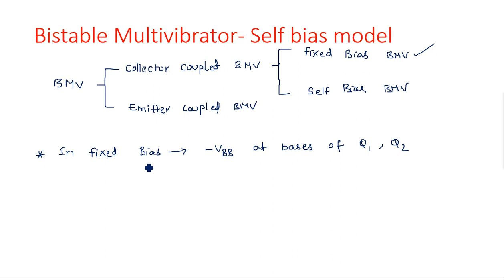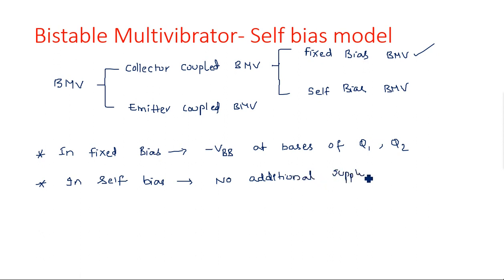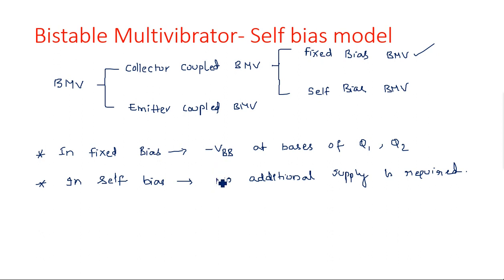In fixed bias, we are fixing the voltage at the base of the transistor to make it biased. But in the case of self-bias, by the name you can understand — it is self-biased. No additional voltage is required; that is why it is called self-bias. No additional supply is required. In fixed bias we are giving the supply, but in self-bias we don't need to give any additional supply.